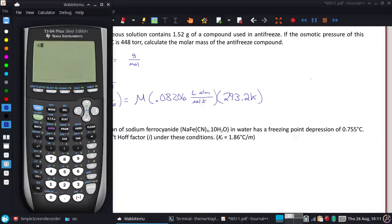There, all right. Just got to be smarter than the calculator, apparently. 448 divided by 760. 760 gives us atmospheric pressure. We're now going to divide by the R, and also divide by the temperature.